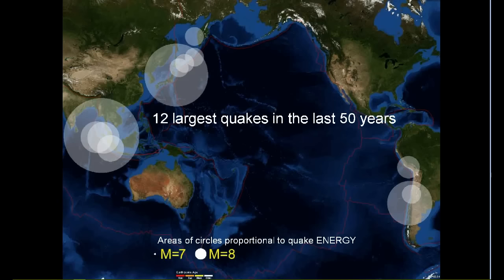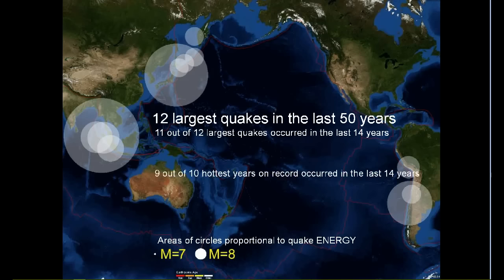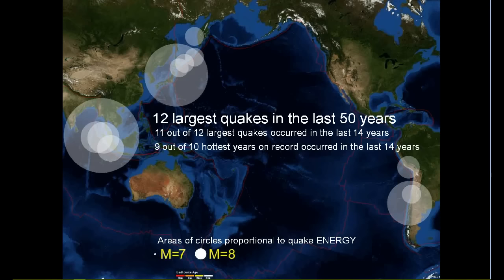Let's have a look at the 12 largest earthquakes in the last 50 years. Areas of circles that show earthquakes are proportional to earthquake energy. 11 out of 12 largest earthquakes occurred in the last 14 years. 9 out of 10 hottest years on record occurred in the last 14 years. Is it a coincidence?